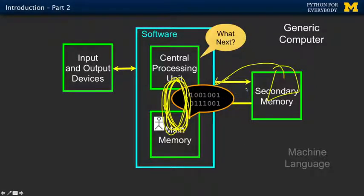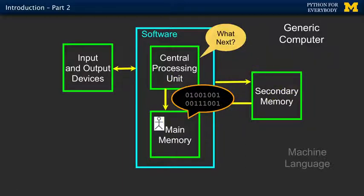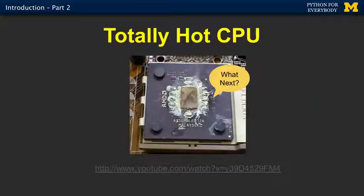Someday you might look into that, but that's more of a computer science thing. The software that does this translation is called either a compiler or an interpreter — we could talk more about that when you become more of a computer scientist. But for now, we're going to focus on how to write this code.